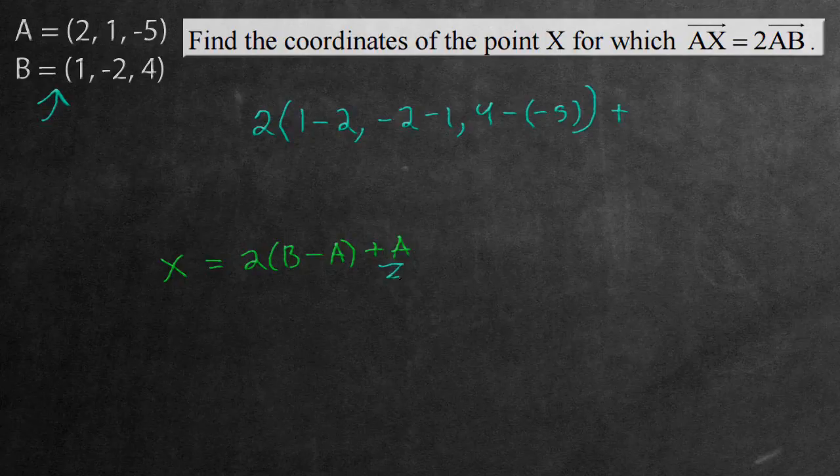And this here at the end, we're going to be doing add the A vector. So let's also put that in. Another bracket, going to be 2, 1, and a negative 5.